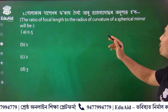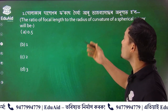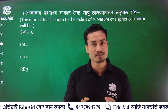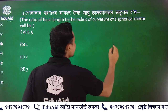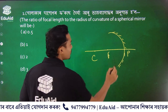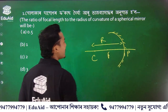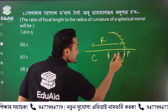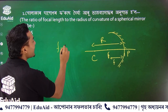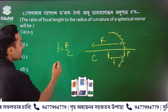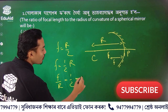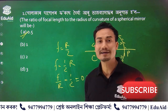The first question is: the ratio of focal length to the radius of curvature of a spherical mirror will be what? This is a concave mirror. Here we have the pole, center of curvature, and focus. The radius of curvature is the distance from pole to center of curvature. The focal length f equals r by 2. So f by r equals 1 by 2. Option number A will be correct.